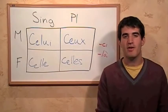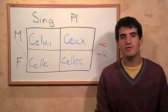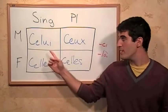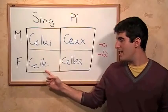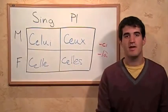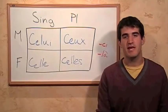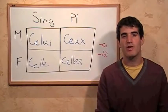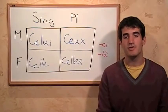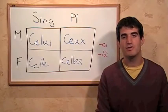You may notice that these are very similar to the pronouns for him, her, and them: 'lui,' 'elle,' 'eux,' and 'elles.' Except that in these cases, we use 'ce' and add them together, making 'celui,' 'celle,' 'ceux,' and 'celles.'